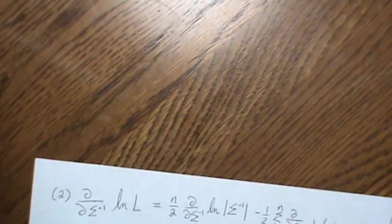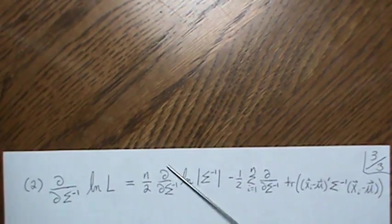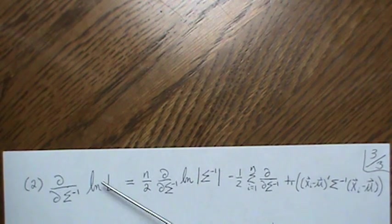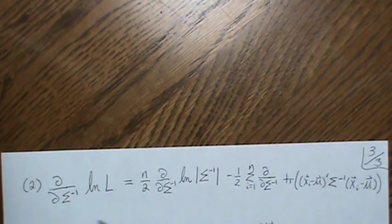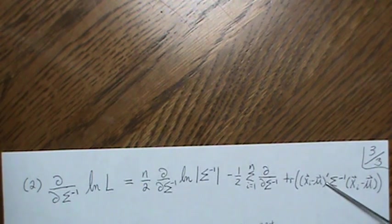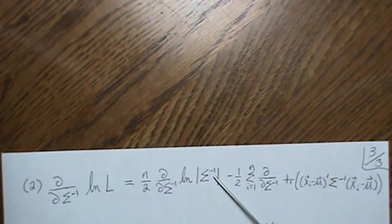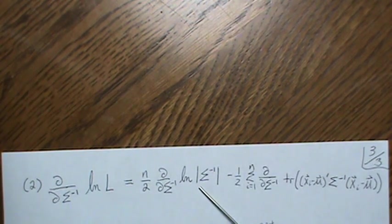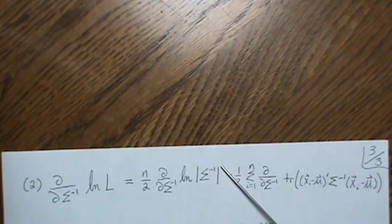So now I want to go in and show you the sort of the common way to find the MLE for sigma. And so here, they take the partial with respect to sigma inverse, because that's sigma inverse and this is much easier. So where do we get sigma inverse?